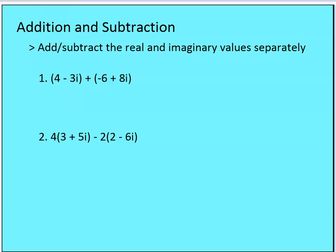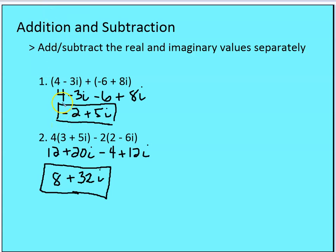For the practice problems — removing parentheses and distributing the positive sign, the signs stay the same. Adding real numbers: 4 minus 6 is negative two. Adding imaginary numbers: negative 3i plus 8i is 5i. Answer: negative 2 plus 5i. For number two: distributing gives 12 plus 20i. Then negative 2 times 2 is negative 4, and negative 2 times negative 6i is positive 12i. Combining: 12 minus 4 is 8, and 20i plus 12i is 32i. Answer: 8 plus 32i.